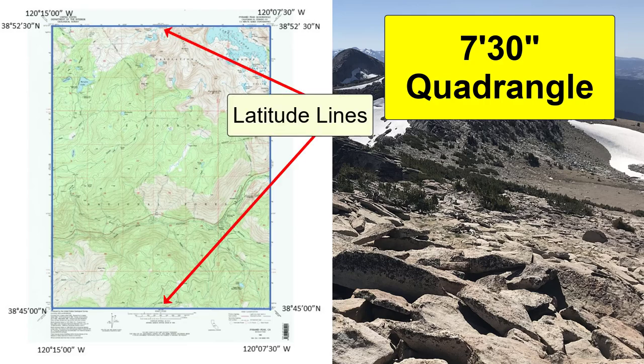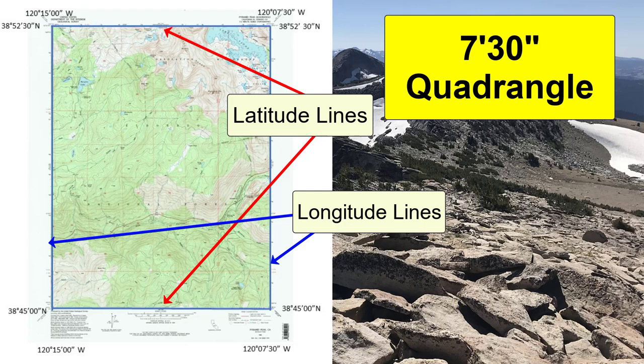Latitude lines are parallel and cover roughly the same distance between them regardless of where they are on the planet, so a 7-and-a-half-minute quadrangle will always be this tall. However, longitude lines converge as they approach the poles, so a 7-and-a-half-minute quadrangle will get narrower the further north or south of the equator we get. That means this quadrangle covers less terrain width-wise than it does height-wise.